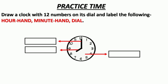Means, aapko ek clock draw karna hai, ismein 12 numbers write karne hai. Aur, uska dial, minute hand, aur hour hand, kahaan par hai yeh show karna hai.